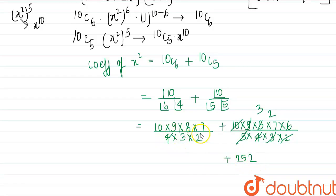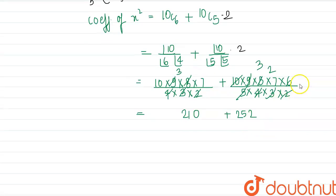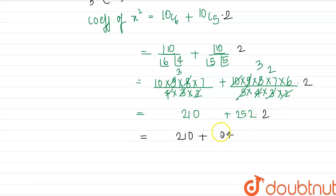After cancellation, 10C6 = 210 and 10C5 = 252. We must remember to include the factor of 2 from the term 2x². So the coefficient of x² is 210 + 2 × 252, which equals 210 + 504 = 714.